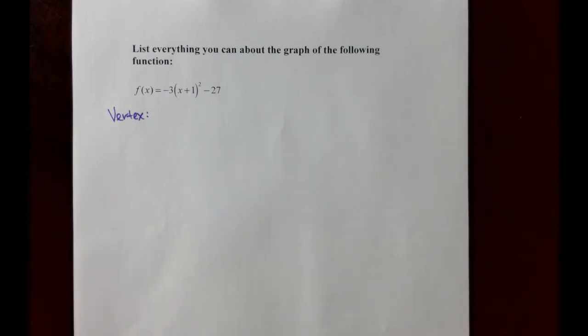Welcome math crew. Our task today is to list everything we can about the graph of the following function. The function we have is f(x) equals negative 3 times the quantity x plus 1 to the second minus 27.